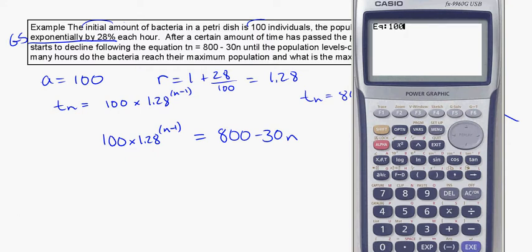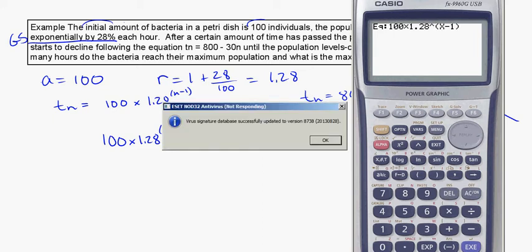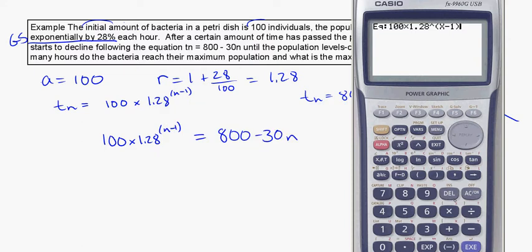100 times 1.28 to the power of something I don't know, minus 1. And this is going to be equal to 800 minus 30 times something you don't know. Press enter and ask it to solve.